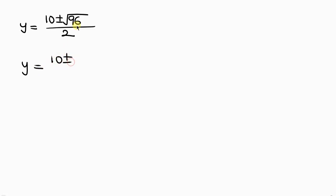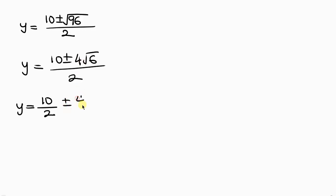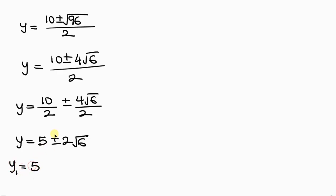The square root of 96 is 4 root 6, so y equals 10 plus or minus 4 root 6, all over 2. Splitting the fraction: y equals 10 over 2 plus or minus 4 root 6 over 2, which gives y equals 5 plus or minus 2 root 6. So there are two values of y: one is 5 plus 2 root 6, and the other is 5 minus 2 root 6.